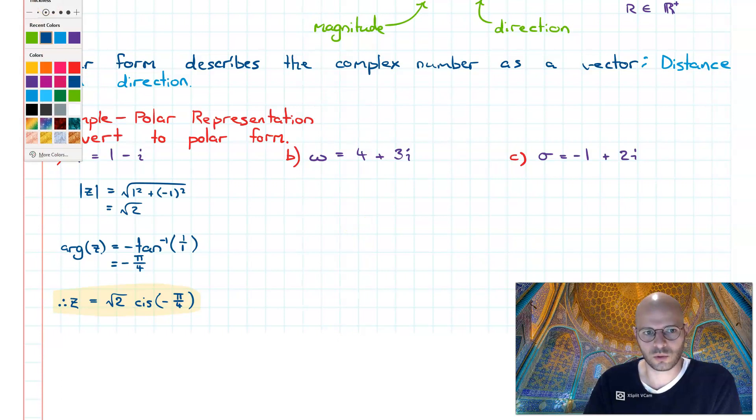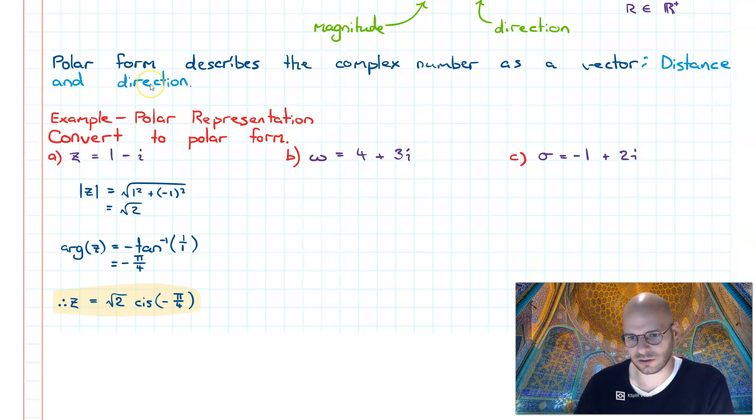Next example, we have omega. Omega is defined as 4 plus 3i. We're going to convert this to its polar form using the exact same method as before. So first I start off by getting the modulus of omega: this is four squared plus three squared all square rooted.